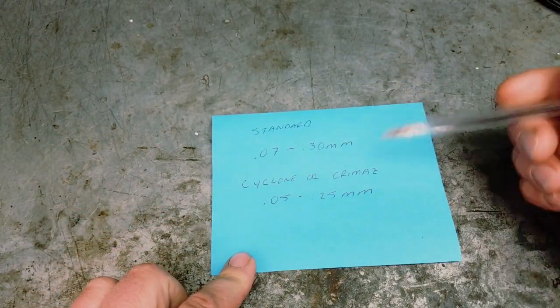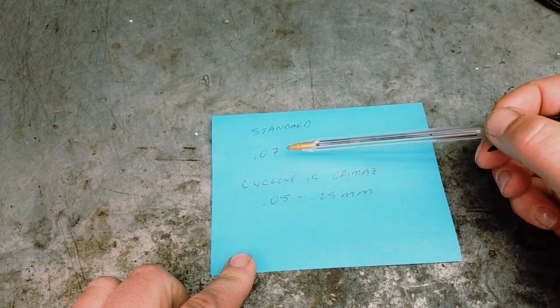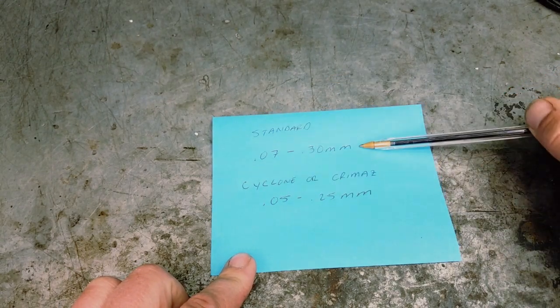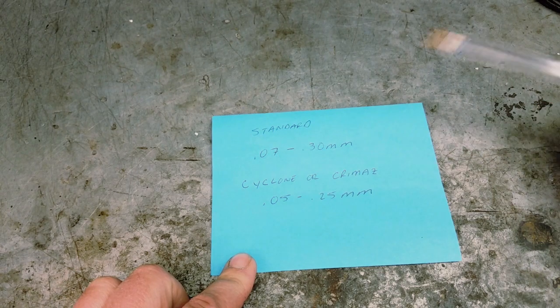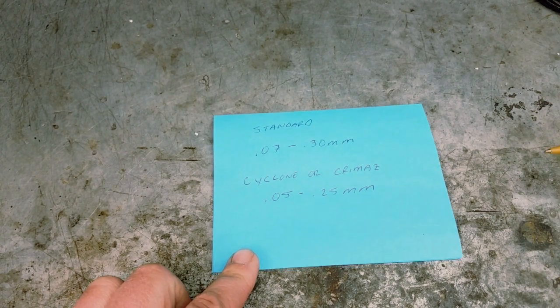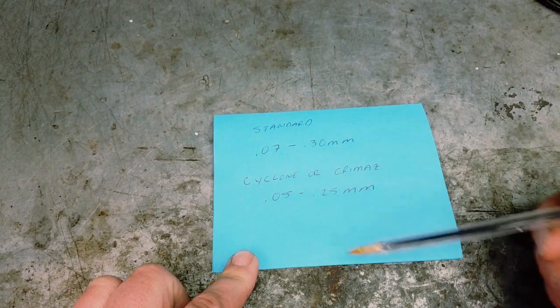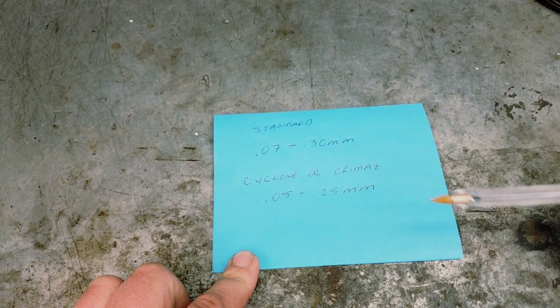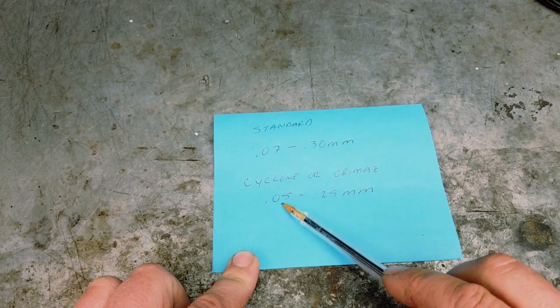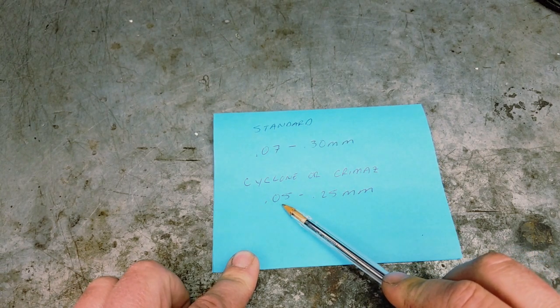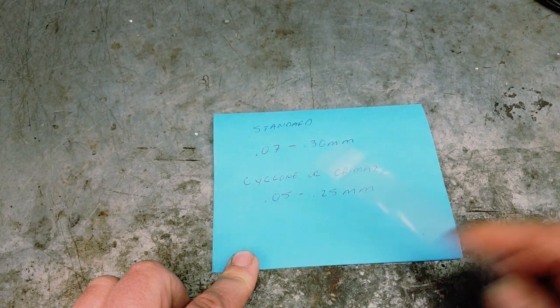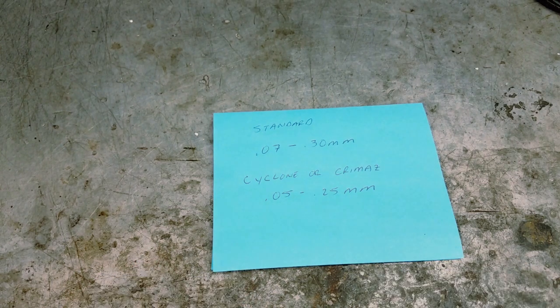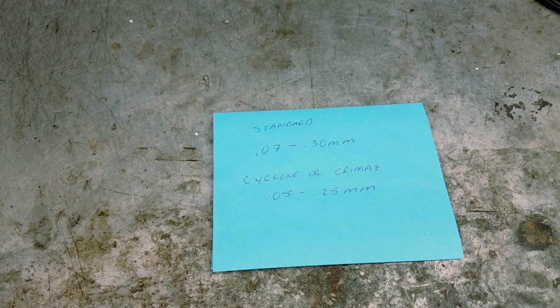As far as how much to shim your gearbox, the gaps are as follows: if you're doing a standard four-speed gearbox, you're going to shim from 0.07 millimeters to 0.3 millimeters gap—that's the gap you measure with your feeler gauge. If you're doing a Cyclone or a Chemeez five-speed gearbox, the specs are 0.05 millimeters to 0.25 millimeters. You always want to try to get it towards the smaller end of the spectrum without going past it. That's primarily due to better part wear, more precise shifting, things of that nature.